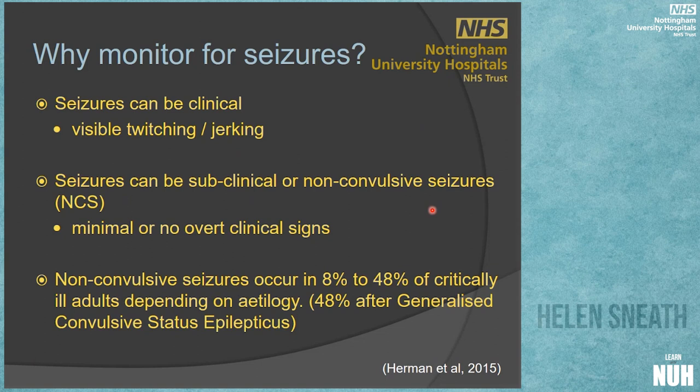Non-convulsive seizures occur in about 8 to 48 percent of the critically ill. That's quite a broad percentage and it depends on the aetiology - what has caused the seizure - whether it's someone with a subarachnoid haemorrhage, traumatic brain injury, or infection. That high percentage of 48 percent relates to someone who's come in after a generalised convulsive status epilepticus. They are more likely to go on to have non-convulsive seizures that you can't see.